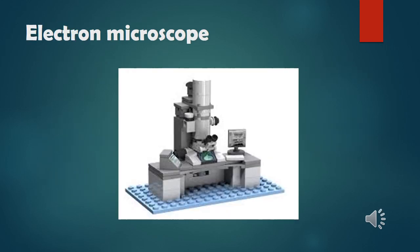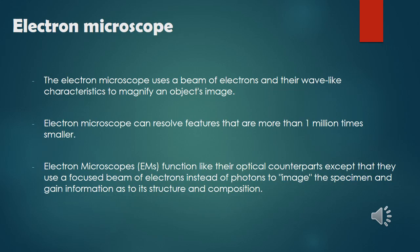The Electron Microscope uses a beam of electrons and their wave-like characteristics to magnify an object's image. Electron Microscopes can resolve features that are more than 1 million times smaller. They function like their optical counterparts except that they use a focused beam of electrons instead of photons to image the specimen and gain information as to its structure and composition.